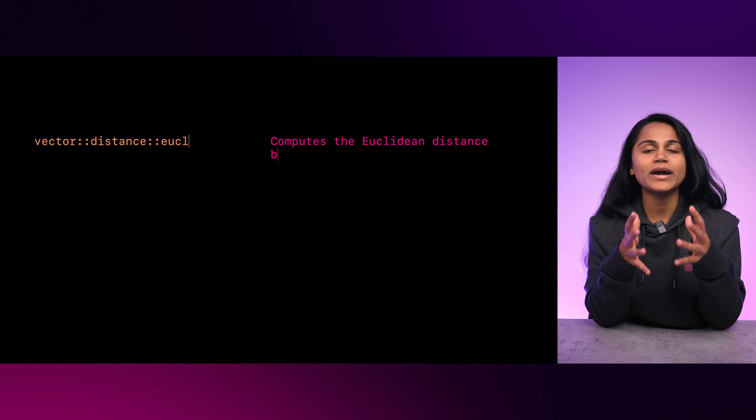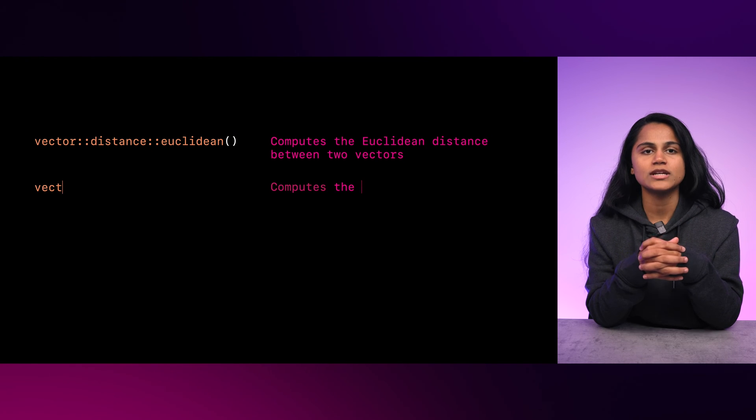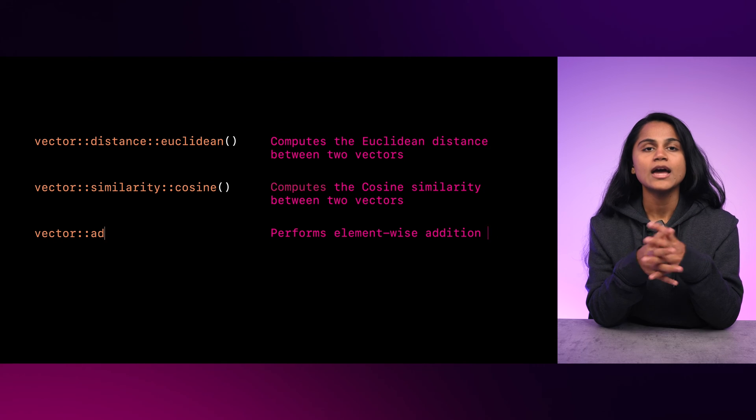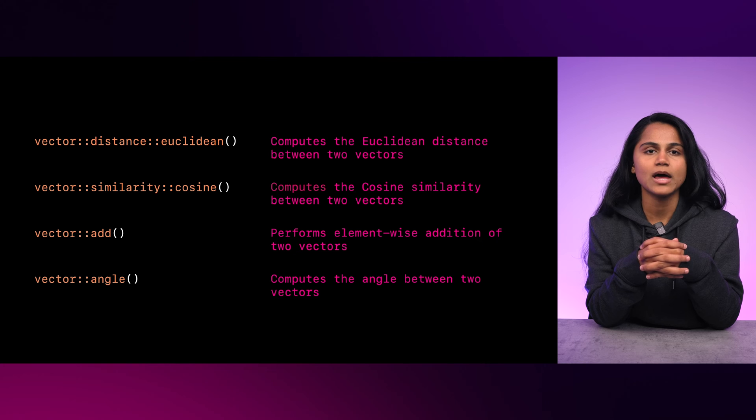Vector functions in SurrealDB are a collection of operations that include distance measurements, similarity coefficients, and other basic and complex calculations related to vectors. For example, the vector distance Euclidean operation is used to compute the Euclidean distance between two vectors, and the vector similarity cosine operation helps in computing the cosine similarity between two vectors. These vector functions pave the way for vector search in SurrealDB.